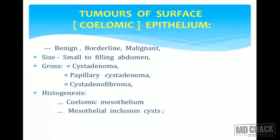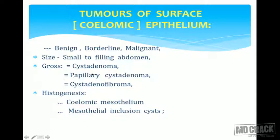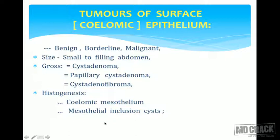Surface epithelial tumors can be huge, filling the entire abdomen. Grossly, if the content is straw-yellow watery fluid it is serous; if thick and gelatinous it is mucinous. Cystadenomas with papillary excrescences are called papillary cystadenomas, which can become papillary cystadenocarcinomas. Cystadenofibromas contain equal amounts of glandular and fibrous matrix. Histogenetically, these tumors are derived from coelomic mesothelium or from mesothelial inclusion cysts.